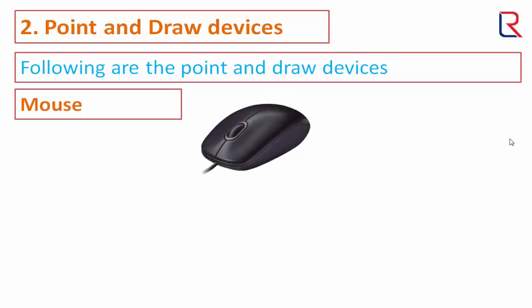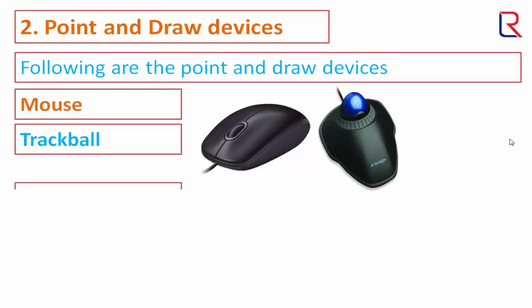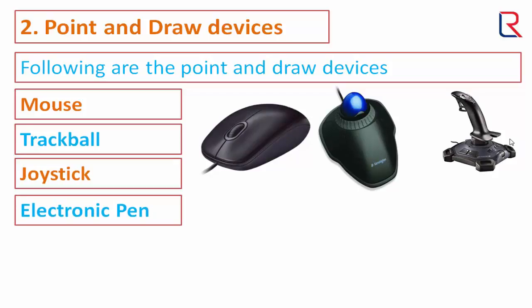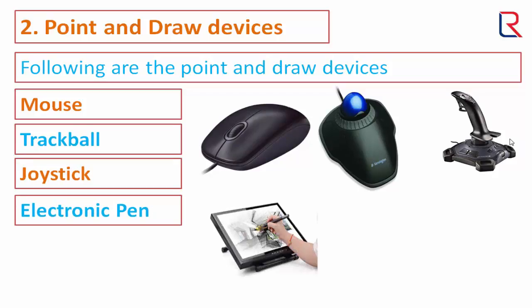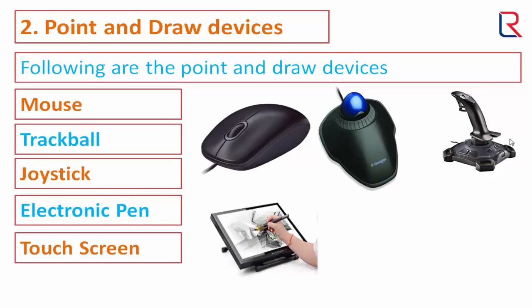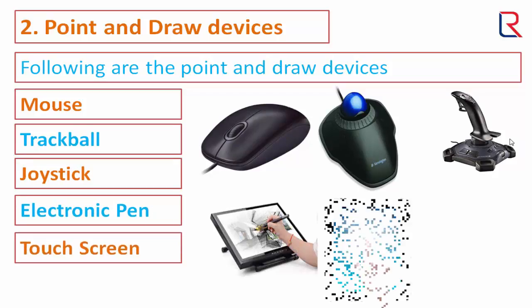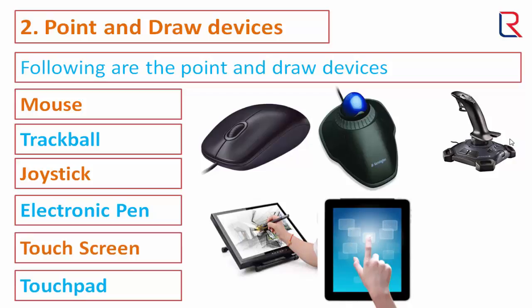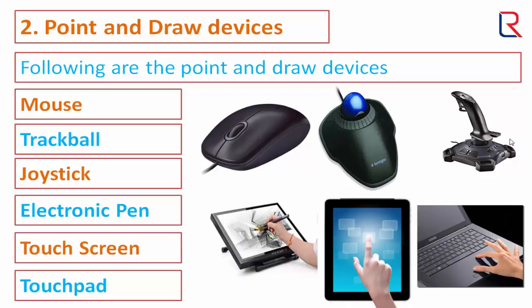Now see the point and draw devices. The following are the point and draw devices: mouse, trackball, joystick, electronic pen, touch screen, and touchpad.